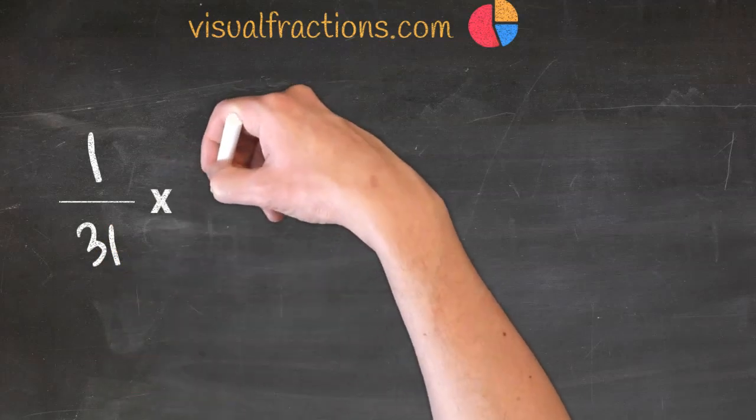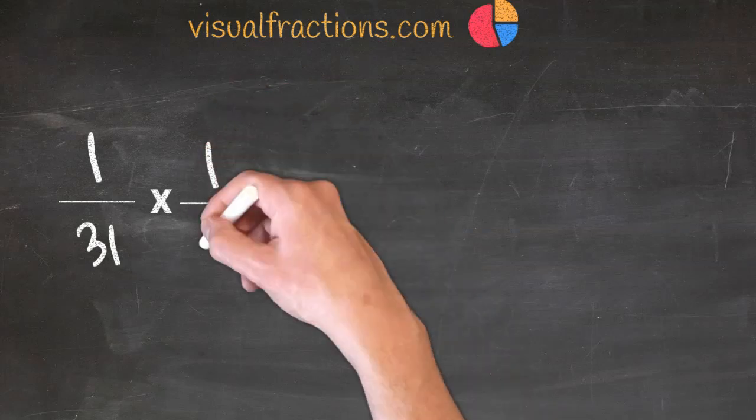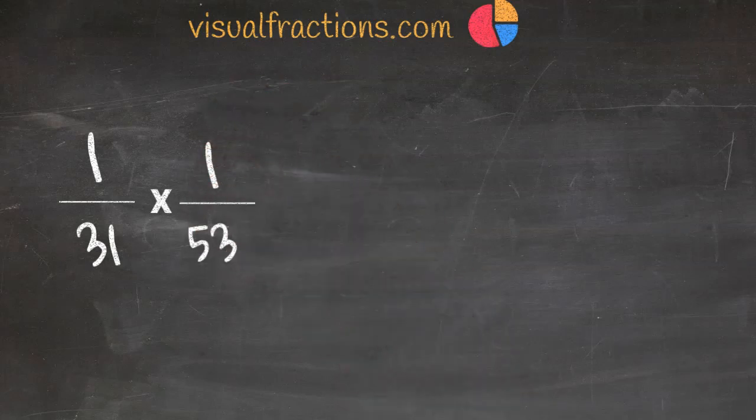Now, let's consider the second fraction, one fifty-third. Here, 1 is the numerator, and 53 is the denominator. This fraction signifies 1 part out of 53 equal parts.